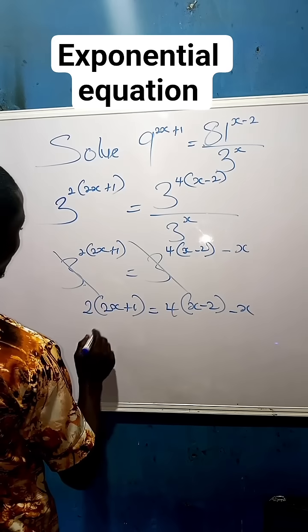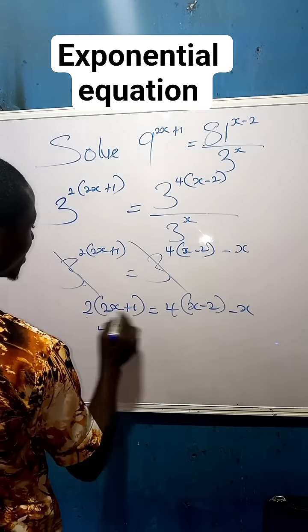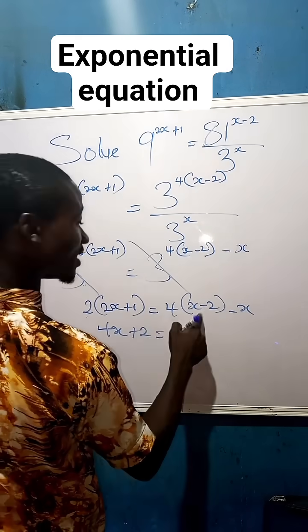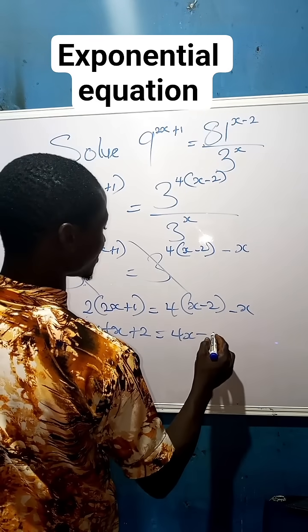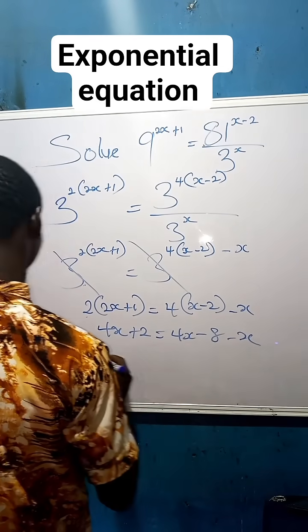We have 2 times 2x is 4x, plus 2 times 1 is 2, equals to 4 times x is 4x, minus 4 times 2 is 8, minus x.